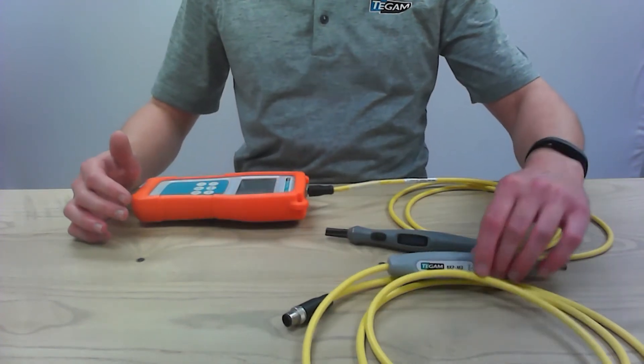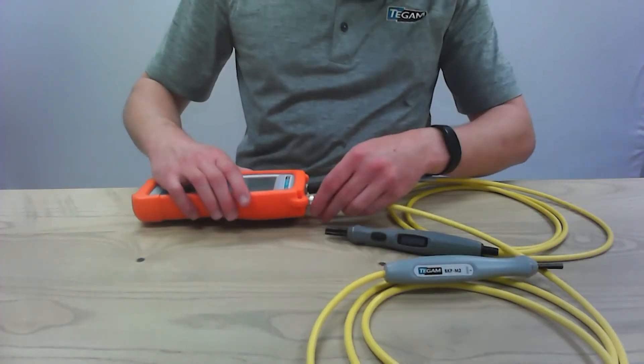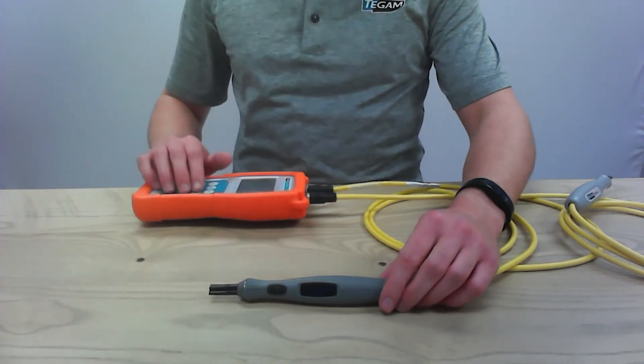Next, in channel two, you'll take your non-display probe and you'll do the same thing. Now, to test the display probe, turn the unit on.